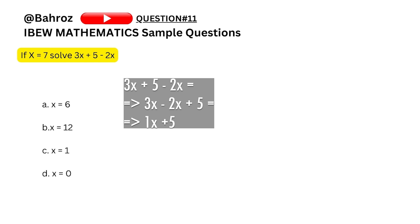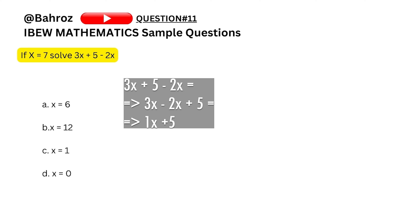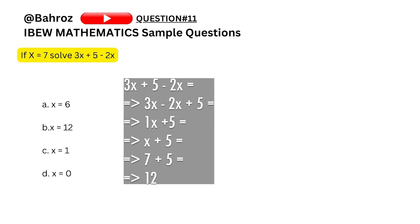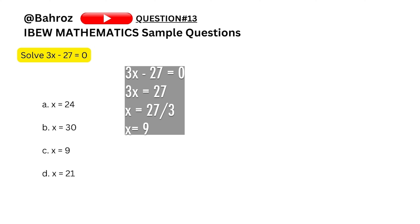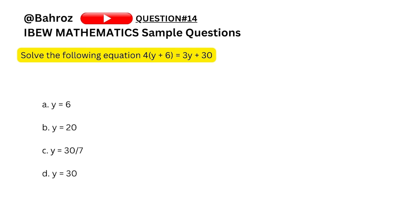Question eleven: if x equals 7, solve 3x plus 5 minus 2x. It's best to simplify the equation first: 3x minus 2x is x, so x plus 5. With x equals 7, that gives 7 plus 5 which is 12, so the answer is B. Question twelve: solve for the square root of 121. Using elimination: 11 times 11 is 121, so A is the answer. Question thirteen: solve 3x equals 27. Move 27 to the right side: 3x equals 27, divide both sides by 3, x equals 9, so C is the answer.